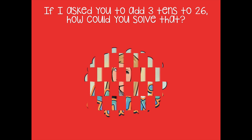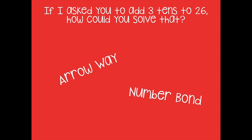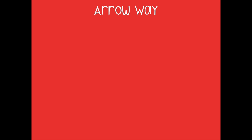So if I asked you to add three tens to 26, how could you solve that? Think of some strategies. What strategies could I use to help me solve adding three tens to 26? Well, one way we could use is the arrow way — we've learned that — and then we could also use a number bond. So let's see how we could use the arrow way to solve this problem. Here I have 26 plus 30.